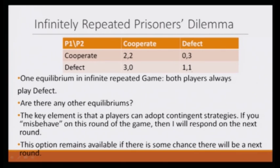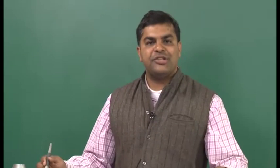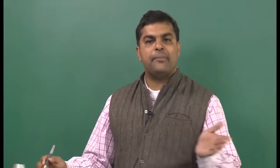What do we mean by contingent strategy? Based on some observation — if you misbehave in this round of the game, then I will respond to you in the next round. So if you cooperate with me, I will cooperate with you; if you defect, I will also defect. And this sort of contingent strategy remains available if there is some chance that there will be a next round. We saw this did not work in the case of prisoner's dilemma when we were talking about finitely repeated games, because after some point the game ends and then this logic does not work out. When we start doing the backward induction, this logic would follow back to the first stage. But we have some hope in the infinitely repeated game, as in this setting the game never ends — it keeps on repeating.